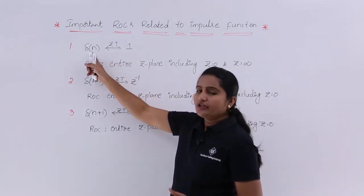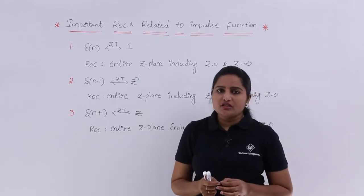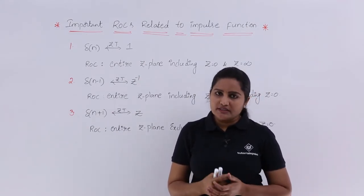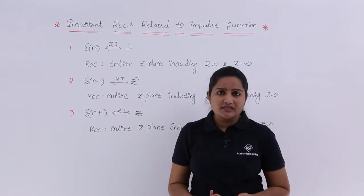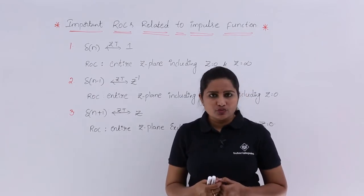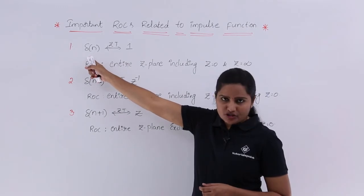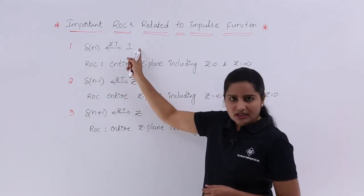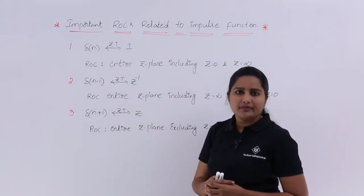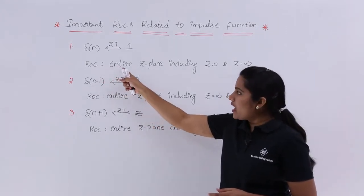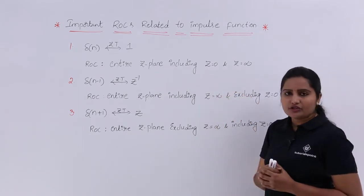If you consider δ[n], you know the Z-transform of δ[n]. The impulse function transform is always equivalent to 1 — not only Z-transform, but any transform. That means any Fourier, Laplace, or Z-transform of the impulse function is equivalent to 1. Similarly, δ[n] is the discrete impulse function, for which the Z-transform is equivalent to 1. For this discrete impulse function, if you consider the ROC, the ROC is the entire Z-plane including Z=0 and Z=∞.